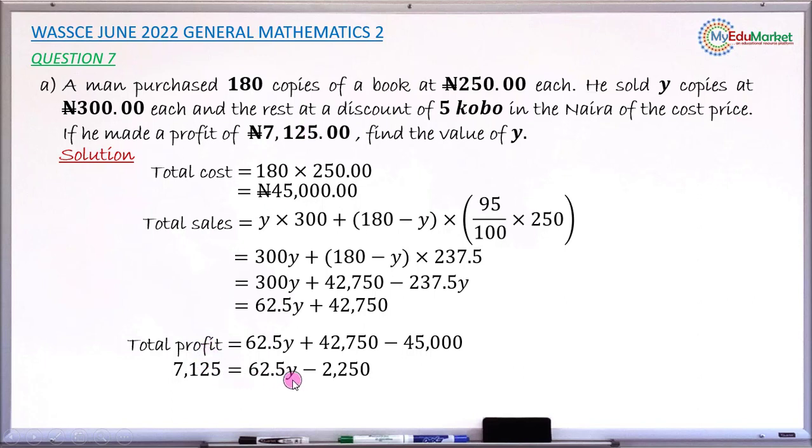Solving this equation, collect like terms. 2,250 shifted to the left becomes positive, added to 7,125 gives 9,375 equals 62.5Y. Dividing both sides by 62.5, you have Y as 150. This is the answer to the question.